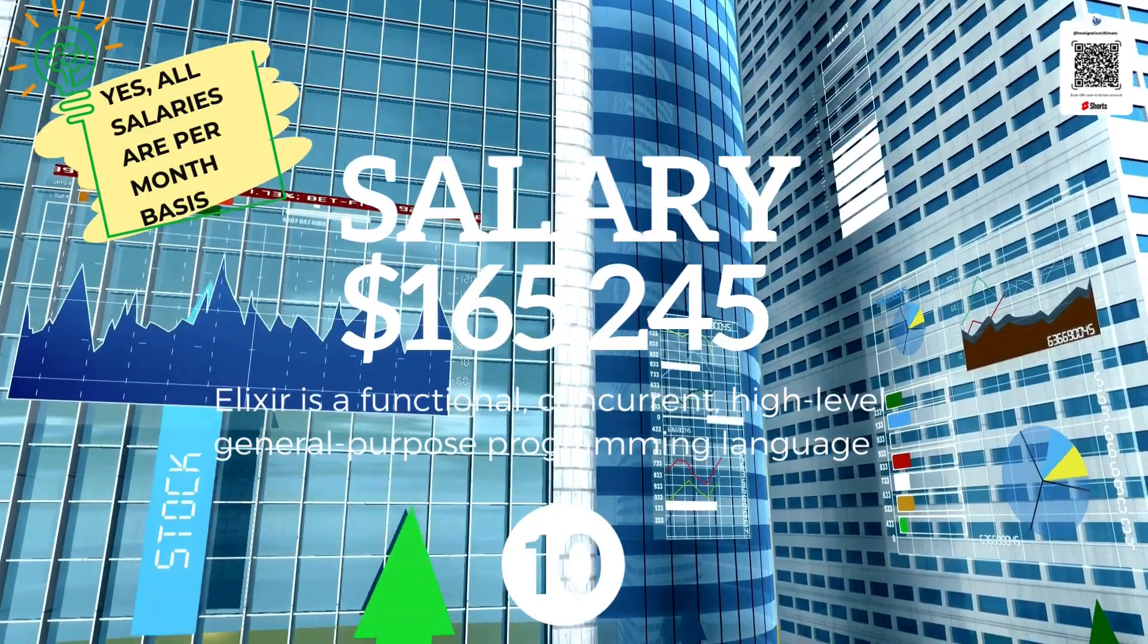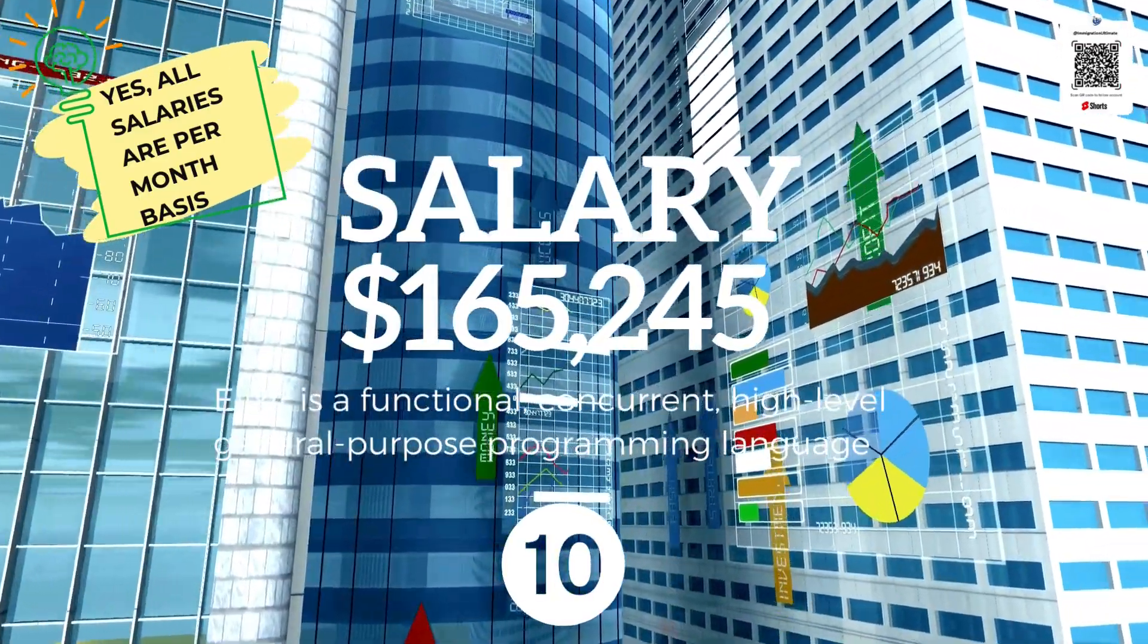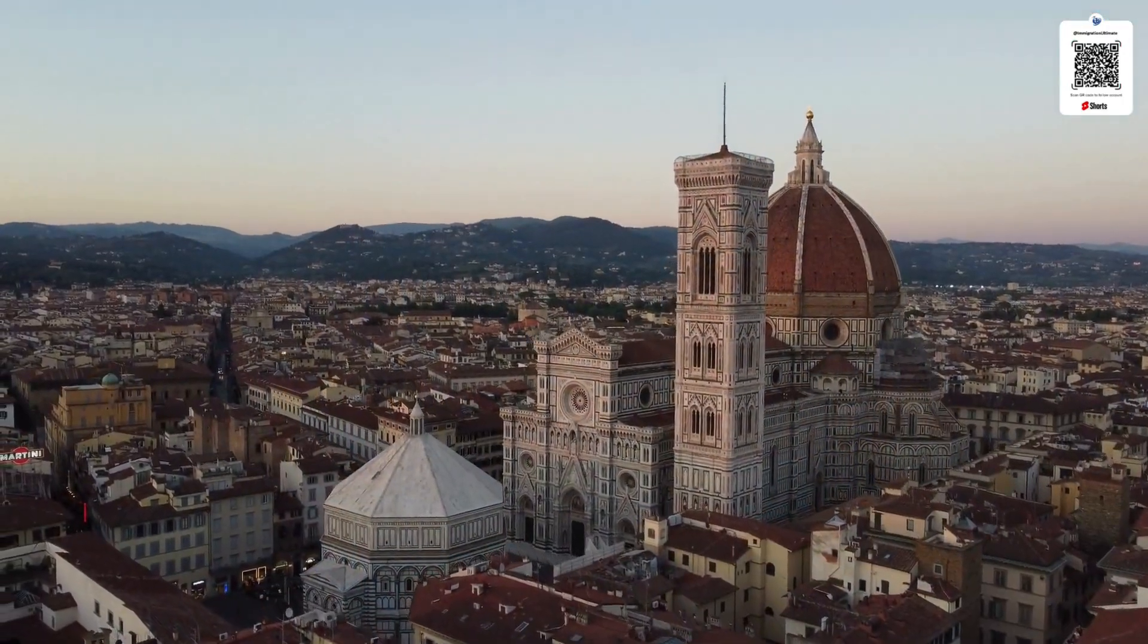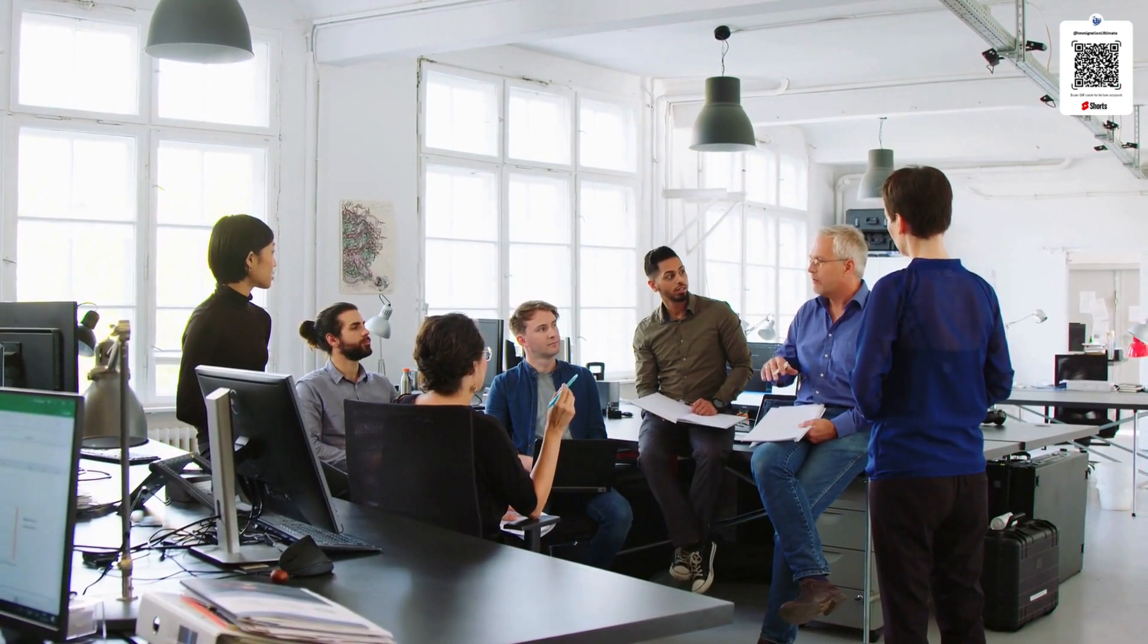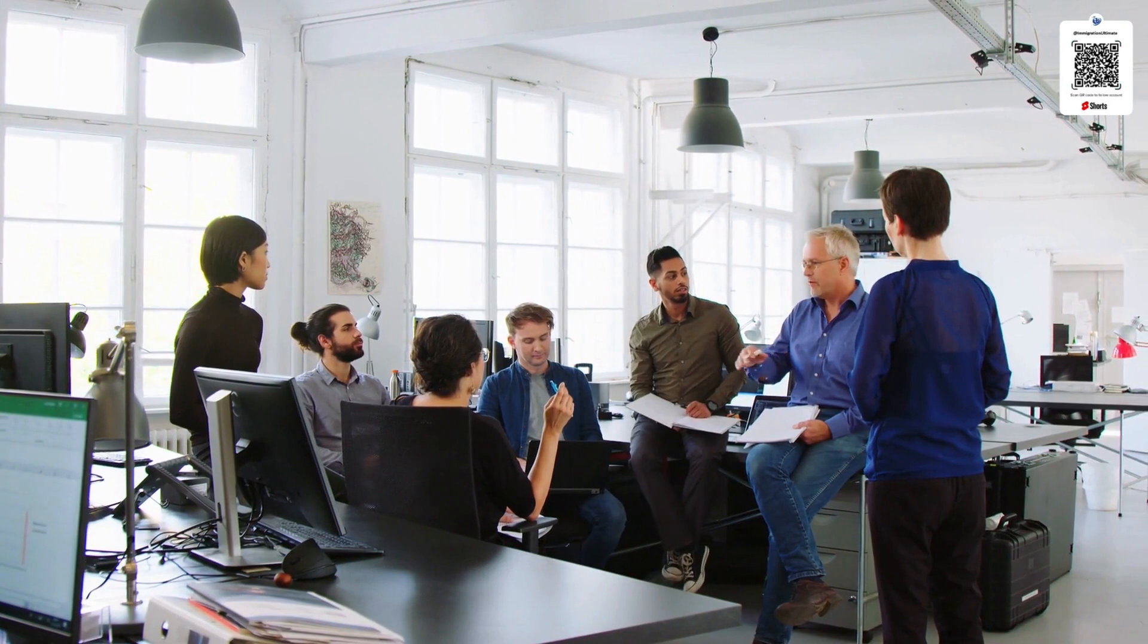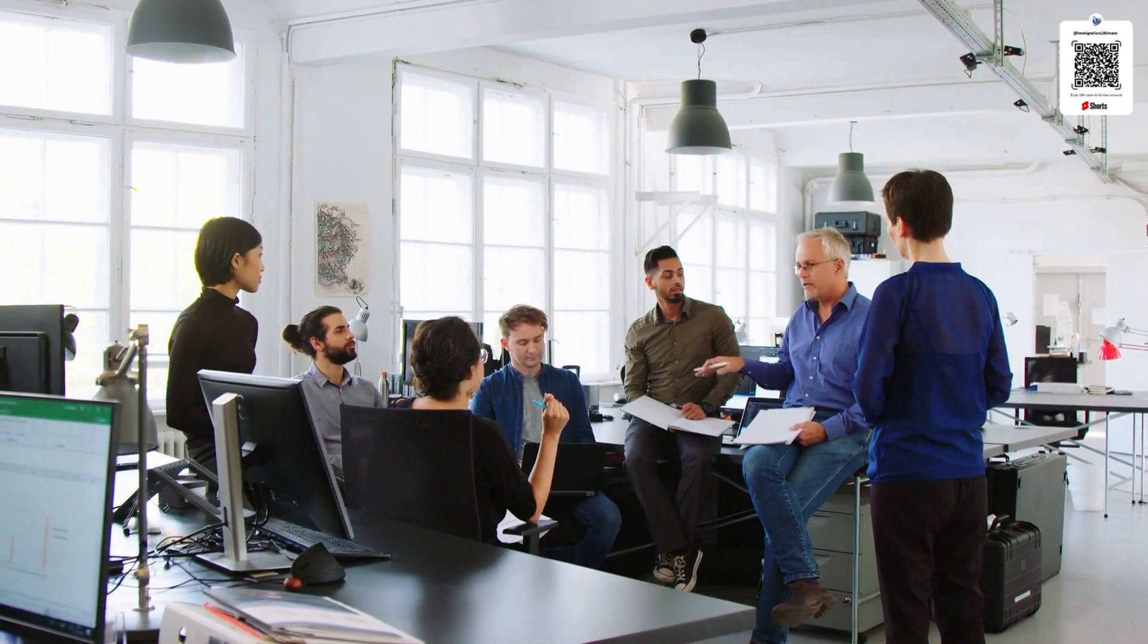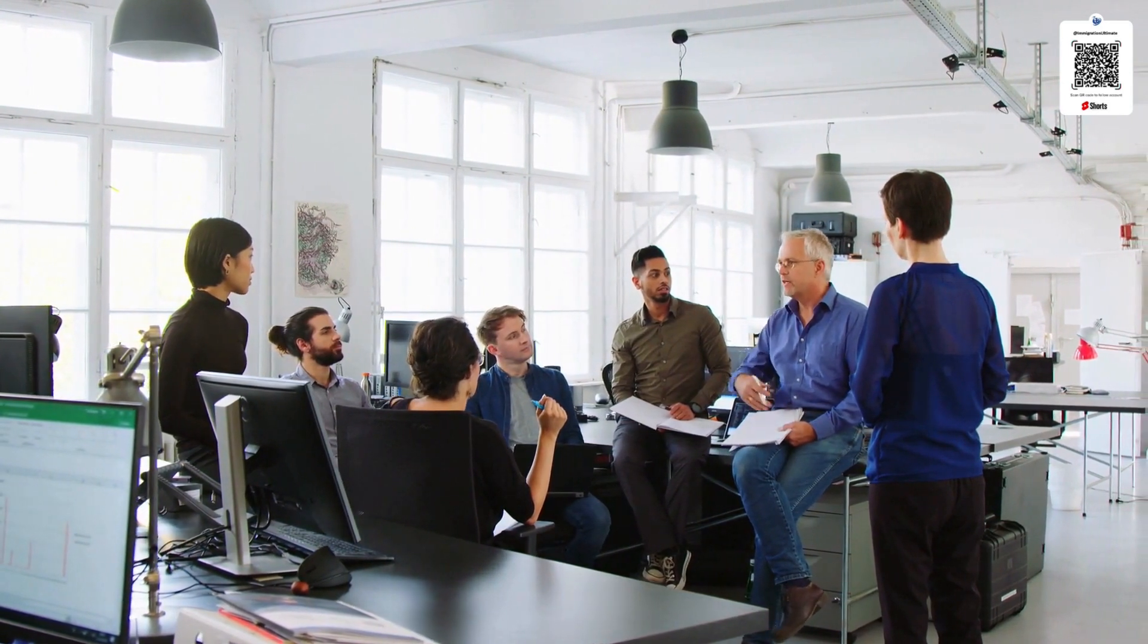Number ten is Elixir at $165,245, a functional, concurrent, high-level, general-purpose programming language also used to implement the Erlang programming language. So these are the top 10 job profiles with the highest salary in the world currently. If you are thinking of having such a high-profile job or high-profile salary,